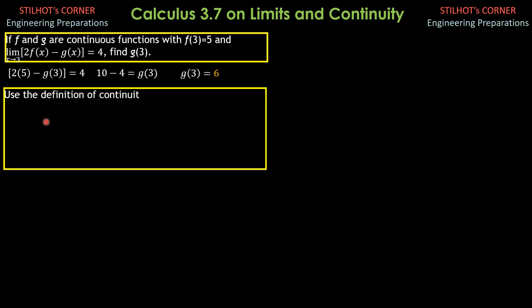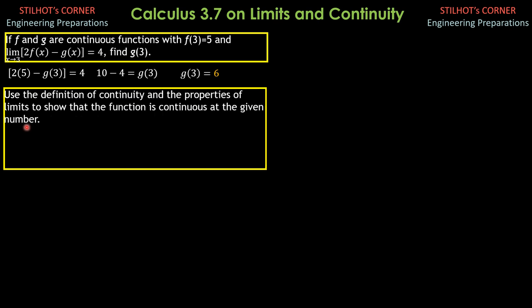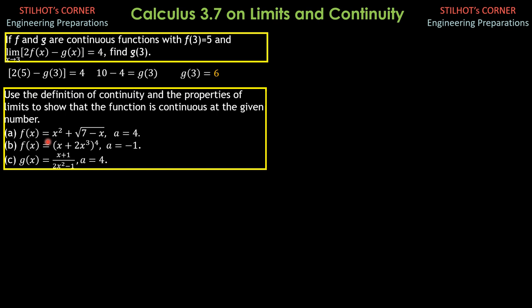Then another problem: use the definition of continuity and the properties of limits to show that the function is continuous at a given number. Remember that the condition for continuous functions is that the limit exists and the function value exists, and for continuity, the limit of the function as x approaches a number is equal to the function value. So when x is 4, the square root of 7 minus 4 is defined. Therefore, the limit of f(x) as x approaches 4 is simply found by substituting 4, and it is equal to f(4).